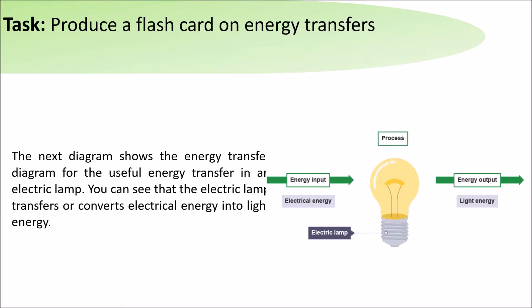This diagram shows the energy transfer taking place in a lamp. It shows that electrical energy is filled in and the useful energy that is coming out is light energy. Be aware that some energy is going to be wasted as heat and sound.